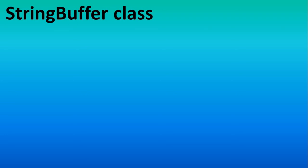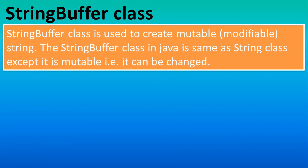Now we will see the StringBuffer class. In the last tutorial we saw the concept of mutable strings. To get a mutable string you need a special class, so for that we have the StringBuffer class. StringBuffer creates a mutable string — it can be changed. That is the main difference between String and StringBuffer.